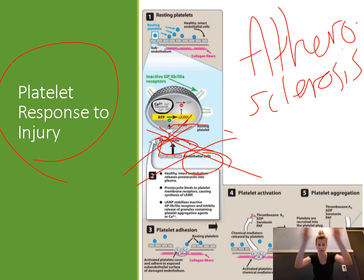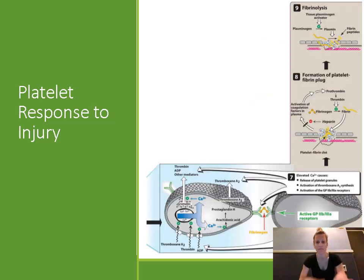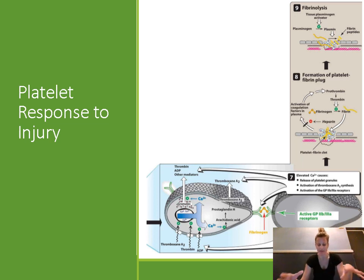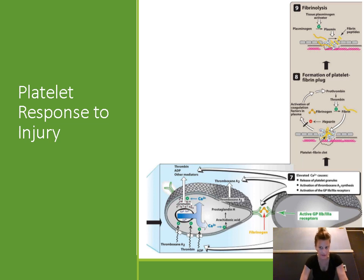Those platelets release their granules and activate all the other platelets in the area — it's an exponential increase in the amount of activated platelets, and they all become sticky and aggregate. The activated platelets have decreased cyclic AMP and increased calcium, causing them to release their granules. Their granules contain platelet-activating factor, serotonin, thrombin, and ADP — adenosine diphosphate — which are mediators that go out into the blood and activate other nearby platelets, recruiting them into the aggregation process.